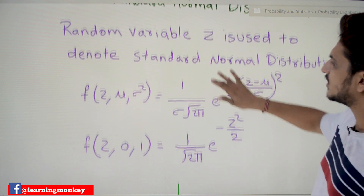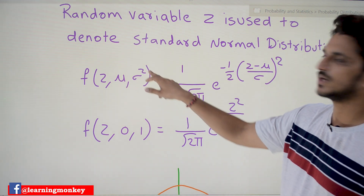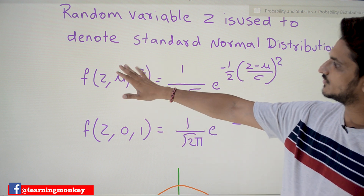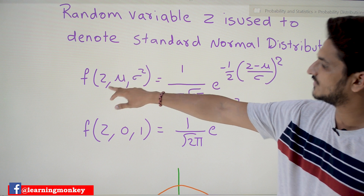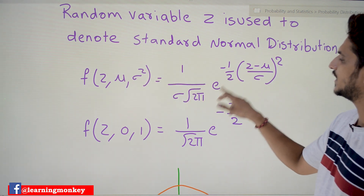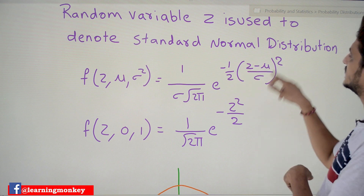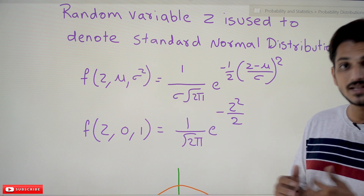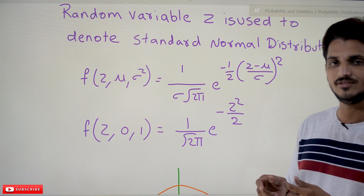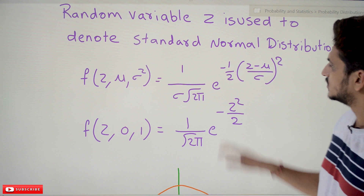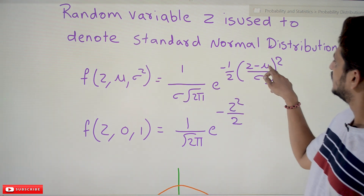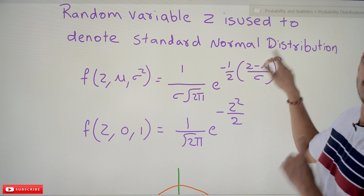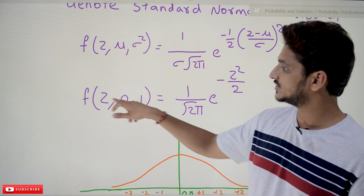The notation f(z; μ, σ²) is used to denote the normal distribution, and the same is used for standard normal distribution. The equation is: f(z) = (1 / σ√(2π)) · e^(−(1/2)·((z−μ)/σ)²). Since variance σ² = 1, σ = 1. Substituting μ = 0 and σ = 1, we get (z − 0)/1 = z, so z² inside the exponent.